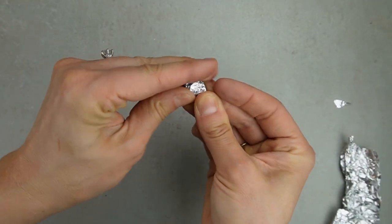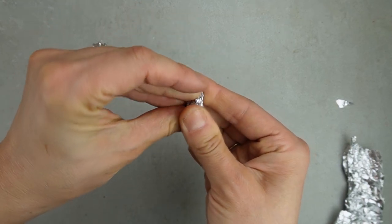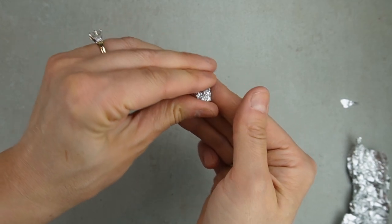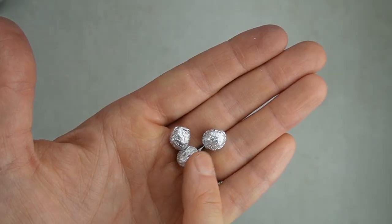Bee skeps are woven baskets honeybees can make honeycomb inside. I tightly crumpled up some aluminum foil to create the shape of the three skeps I'm making.